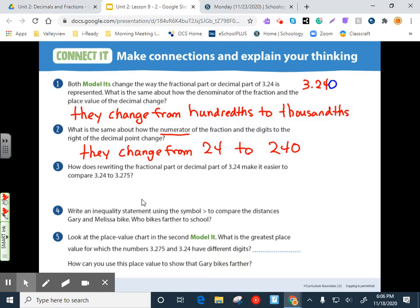Number two, what's the same about how the numerator, which is the top number of a fraction, of the fraction and digits to the right of the decimal point change? They change from twenty four to two hundred forty. Denominators is the bottom, of course.